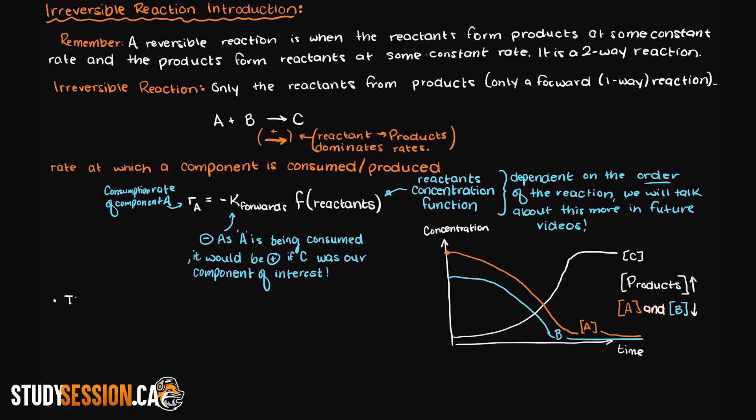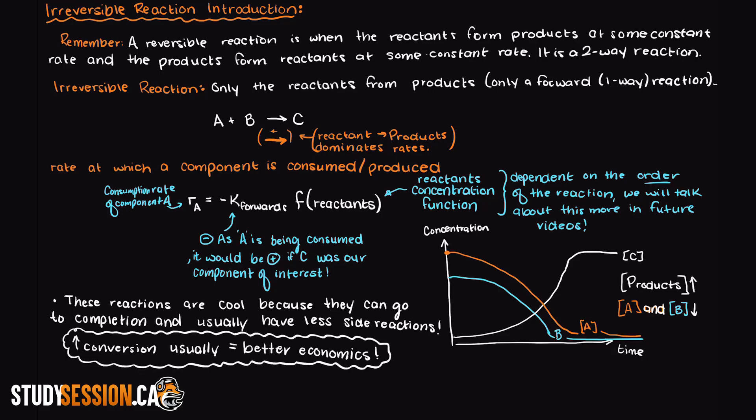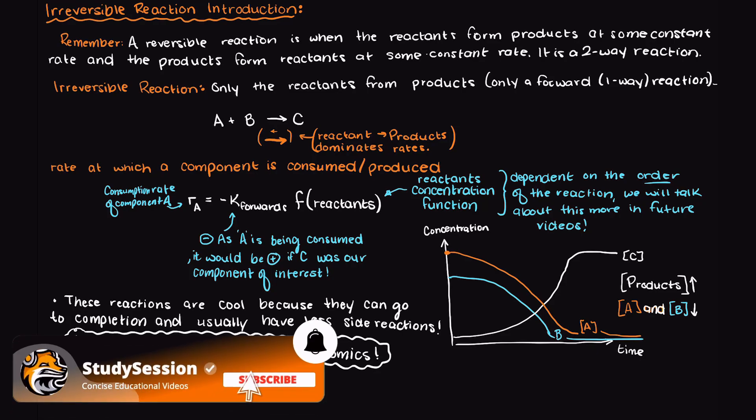Another really cool thing about irreversible reactions is that they can go to completion, meaning sometimes we are able to get 100% conversion of our reactants to our products. Typically, this means we are getting the most economic and chemical use out of our reactants, which is obviously ideal.